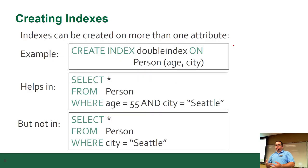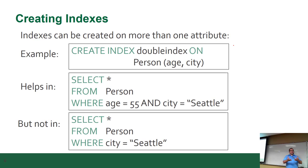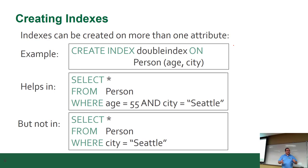Here's a more complex example: if I create an index called double_index because it's indexing two different columns at the same time — CREATE double_index ON person (age, city) — then a query like SELECT * FROM person WHERE age = 55 AND city = 'Seattle' will use that index. However, it will NOT help if you just query WHERE city = 'Seattle', because city does not have a single index to itself.